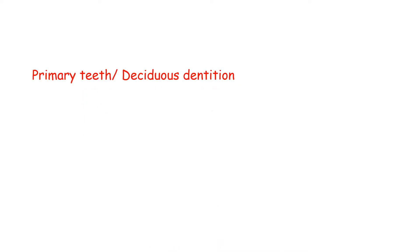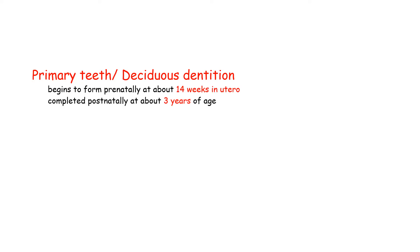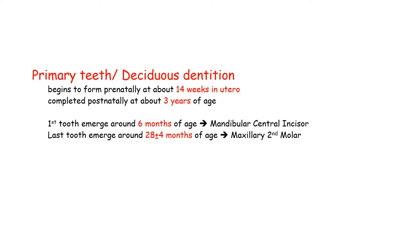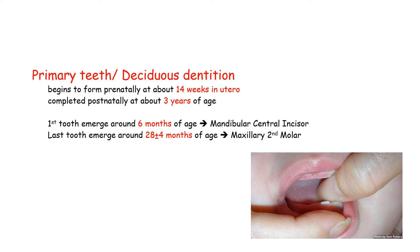Humans have two sets of teeth in their lifetime. The first set is the primary or deciduous dentition, which begins to form prenatally at about 14 weeks in utero and is completed postnatally at about 3 years of age. The first teeth begin to appear at a mean age of 6 months and the last one emerges somewhere between 24 to 32 months. The deciduous dentition remains intact until the child is about 6 years of age.